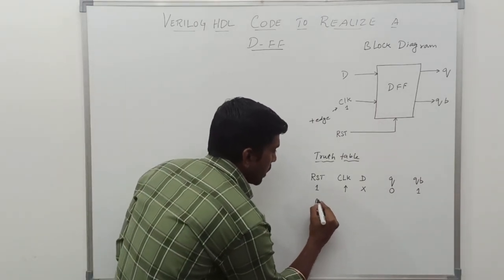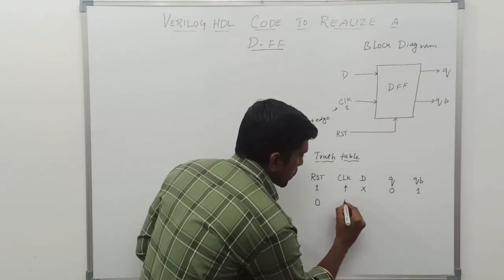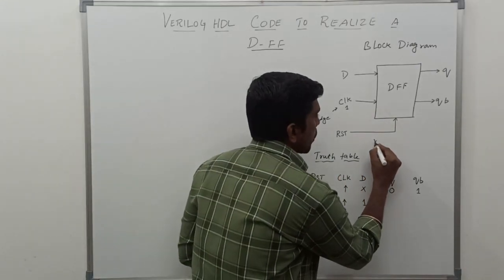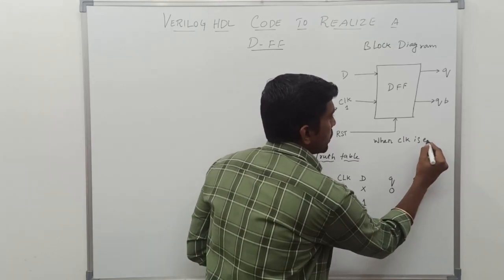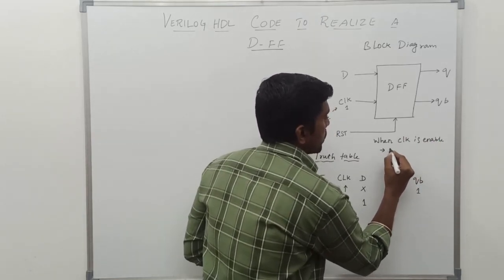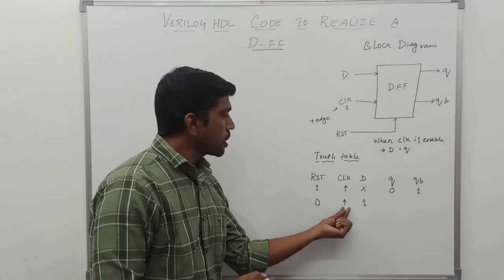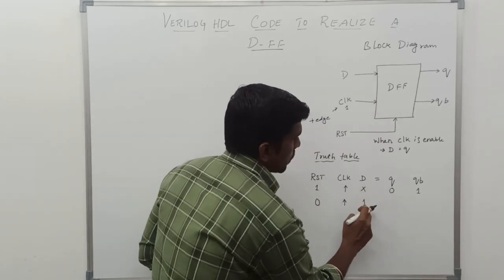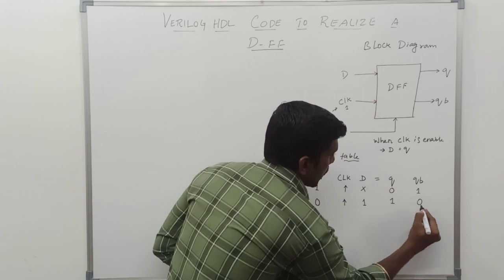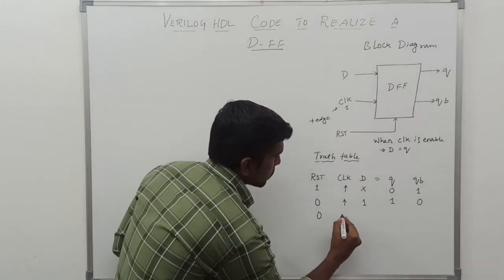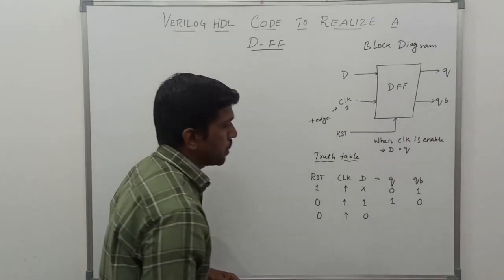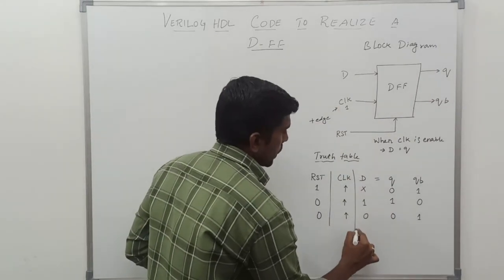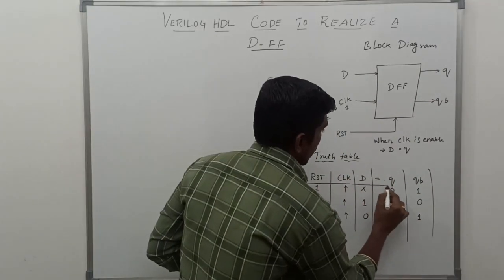Second case: reset value is equal to 0, clock signal is high, D value is 1. In D flip-flop operation, when the clock signal is enabled, D value equals Q. Here clock signal is enabled, reset equals 0, D value equals 1, so Q equals 1. The output of the flip-flop is 1 and Q bar value is 0. Third case: reset value is 0, clock signal goes high, D input is 0 — Q value is 0 and Q bar value is 1.